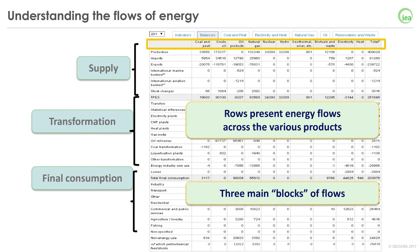Now let's have a look at the different energy flows in the energy balance table. Each row represents one energy flow across all the different energy products. For example, the very first row shows comparable energy production for all products, everything in the same unit. The table is then presented with three main blocks of energy flows: supply, transformation, and final consumption.